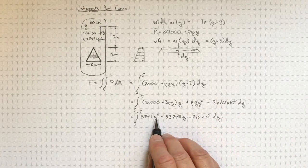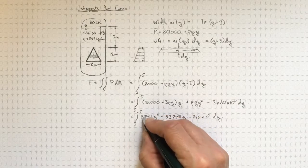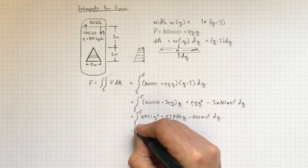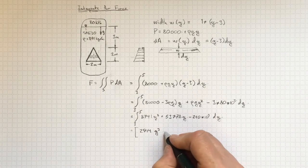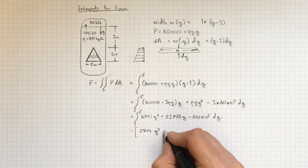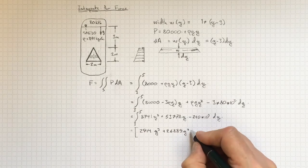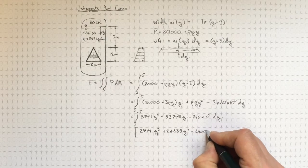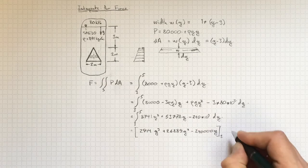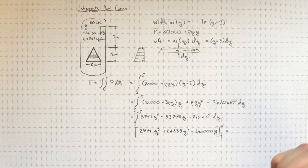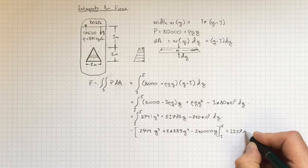It's fairly straightforward to integrate a polynomial like this. I'm going to wind up with one third y cubed by integrating this one. So I'll have 8741 divided by three, which turns out to be 2914 y cubed. I'll have a half y squared coming in here. So half of 53,778 is going to be 26,889 y squared minus 240,000 times y. Because when I integrate a constant, I just multiply by y. And that's evaluated at y equal to three and y equal to five. And when I plug in some numbers for that, I wind up with 235,796 newtons.